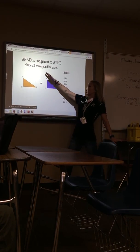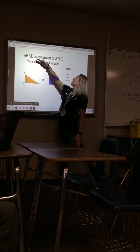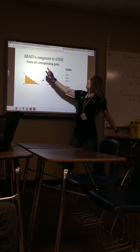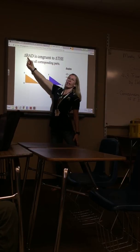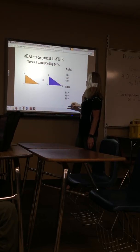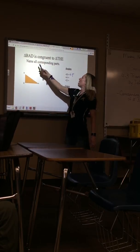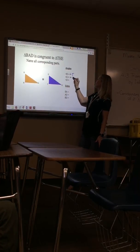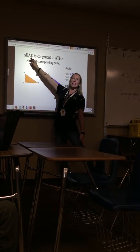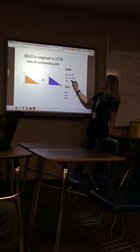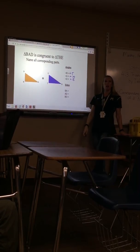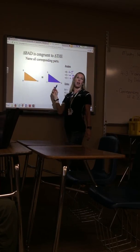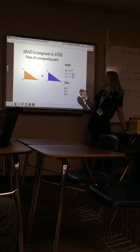If triangle BAD is congruent to triangle THE, angle B would be congruent to angle T — first letter goes to first letter. Angle A would be congruent to angle H. And angle D would be congruent to angle E. You always need to look at the congruent statement rather than the picture. Always look at the statement over the picture.